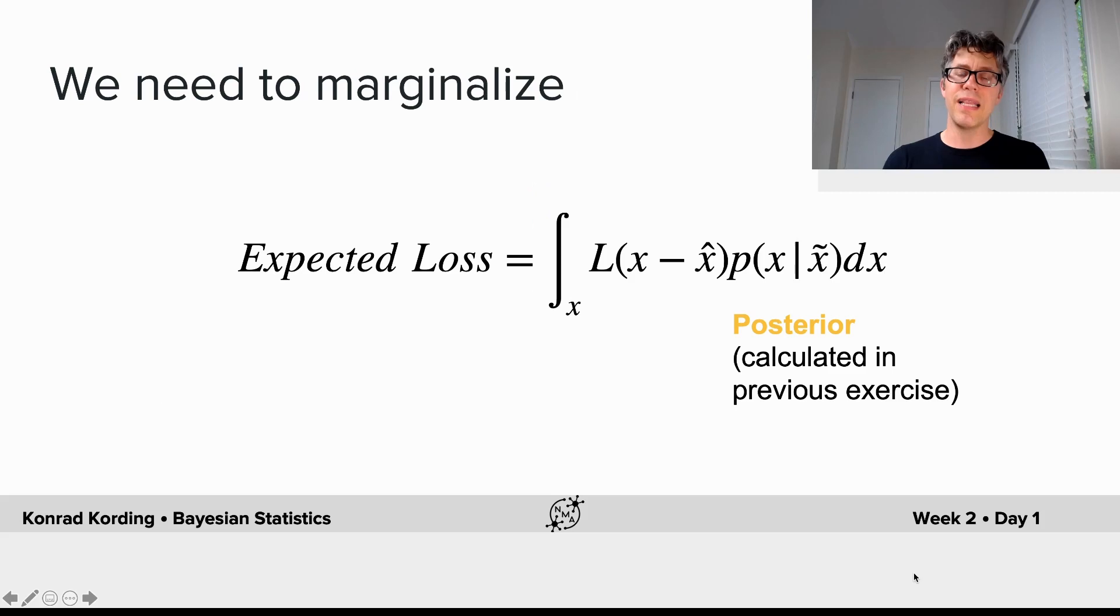We need to multiply that with the loss that would be expected if x was true. Therefore, the expected loss is the integral over x of the loss that would be associated with x if we chose x hat, times the probability of x given tilde x. The probability here is the posterior, and we need to integrate over dx.